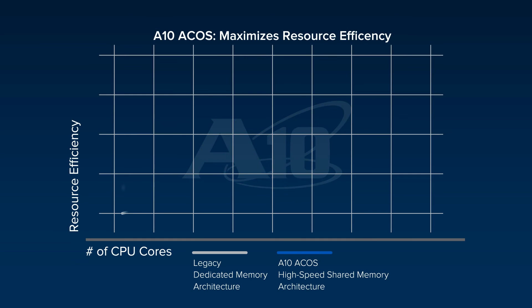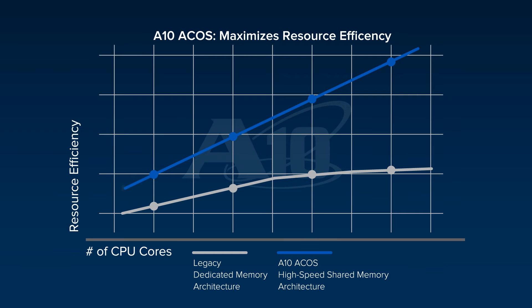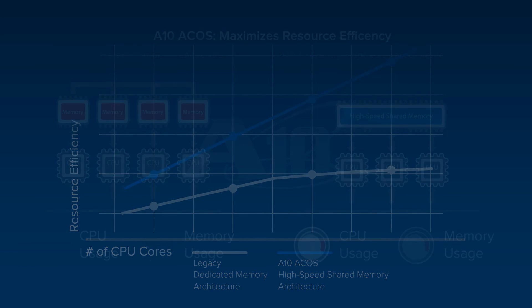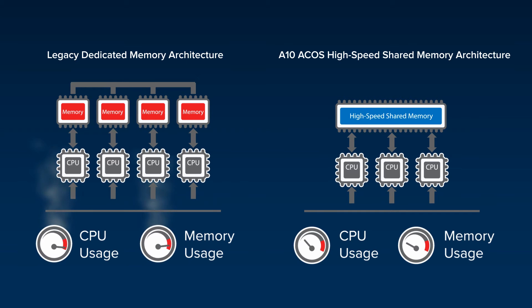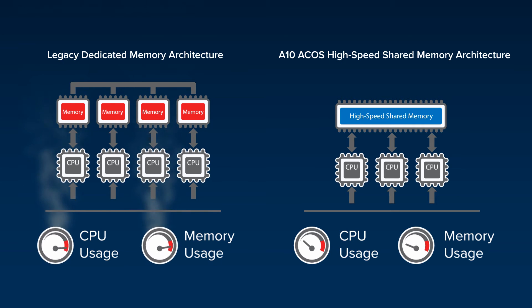ACOS, our advanced core operating system, is a unique multi-processing platform that scales linearly with increasing CPU core density. Our appliances use shared memory architecture to enable all CPUs simultaneous access to the same shared memory space, dramatically reducing processing overhead, which means less work for the system.